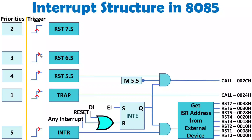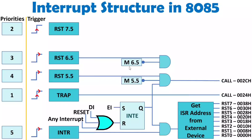Similarly, RST 6.5 is level triggered. When it arises, the AND gate checks that Q of INTE equals 1, and the SIM instruction bit M6.5 must be 0 (unmasked). If it is masked (1), after the bubble it becomes 0, so the AND gate output cannot be 1. If all three conditions are logic 1 at the AND gate, then RST 6.5 will get served and program control jumps to 0034h.